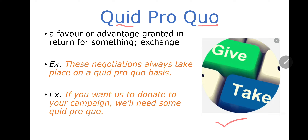Give and take. Examples: These negotiations always take place on a quid pro quo basis. If you want us to donate to your campaign, we will need some quid pro quo. So this is the first noun: quid pro quo.